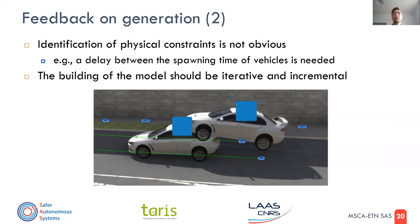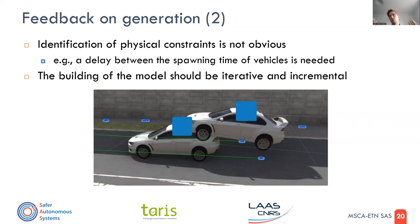So we started from zero again. We added a few parameters, checked the output in the simulator, went back, added another parameter and fixed other things, then simulated again and added constraints, and so on. This approach gives you really the best outcome and is the best way to proceed.